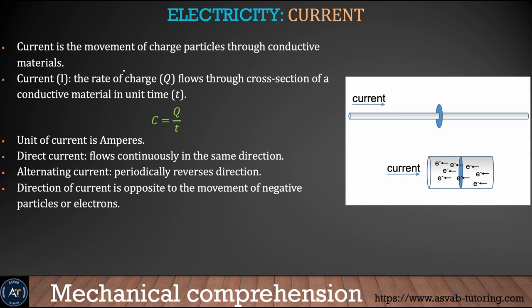Current is the flow of electrons. The formula for current is I = Q/T. The unit of current is the ampere. There are two types of current: direct current (DC power) and alternating current (AC power).